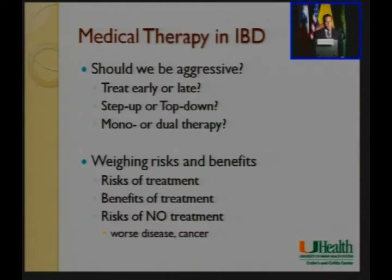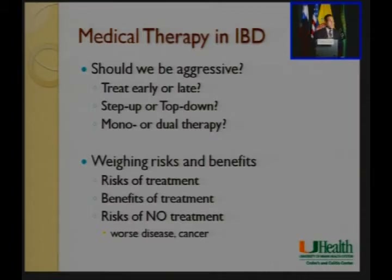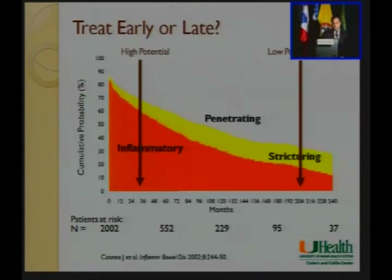There is data suggesting we should be more aggressive. I'll show slides that may lead you to consider treating early rather than late — what we call top-down versus step-up therapy — and whether to start with two drugs instead of one. When talking about drug toxicity, it's important to weigh risks of treatment and benefits of treatment, but also to emphasize the risks of no treatment. Sometimes doing nothing is perhaps the most harm.